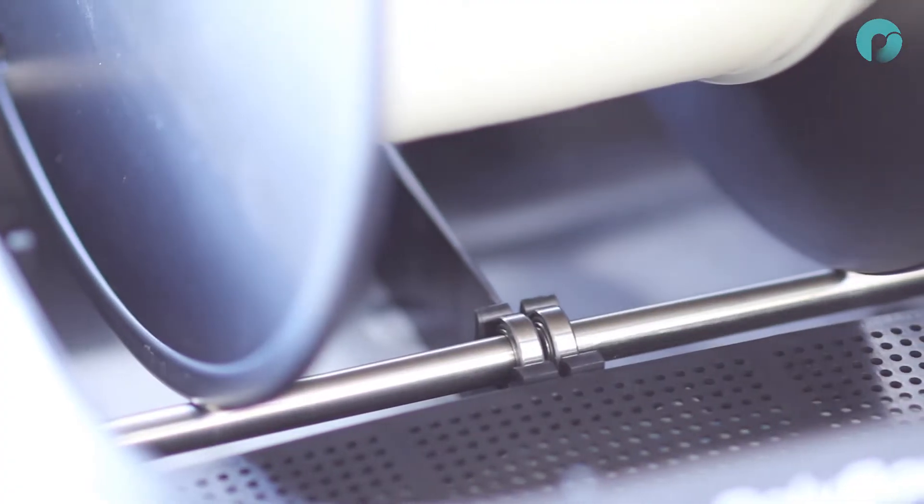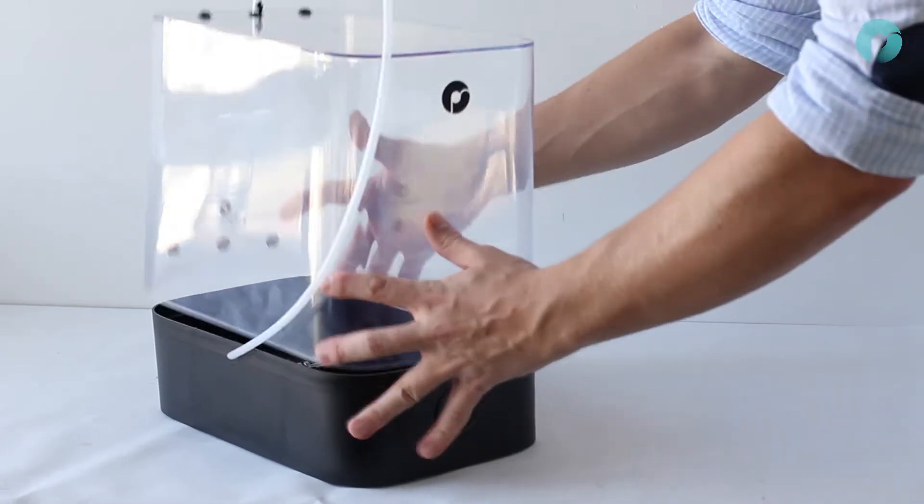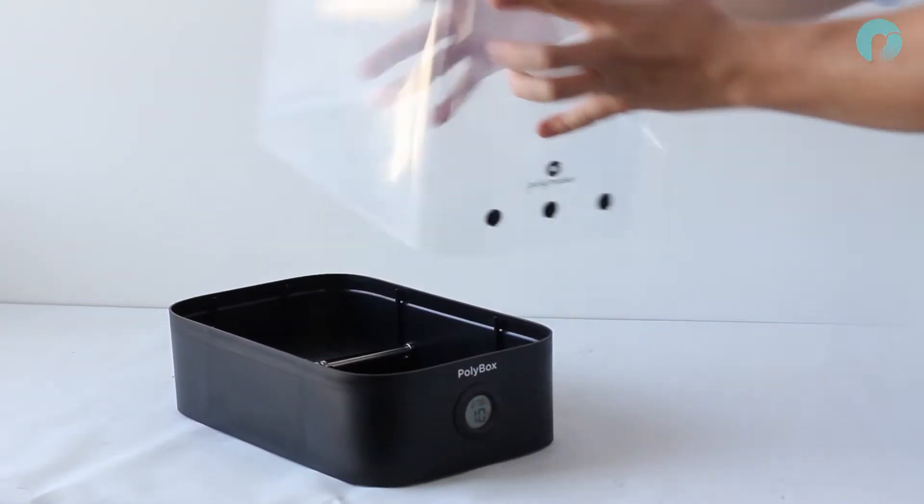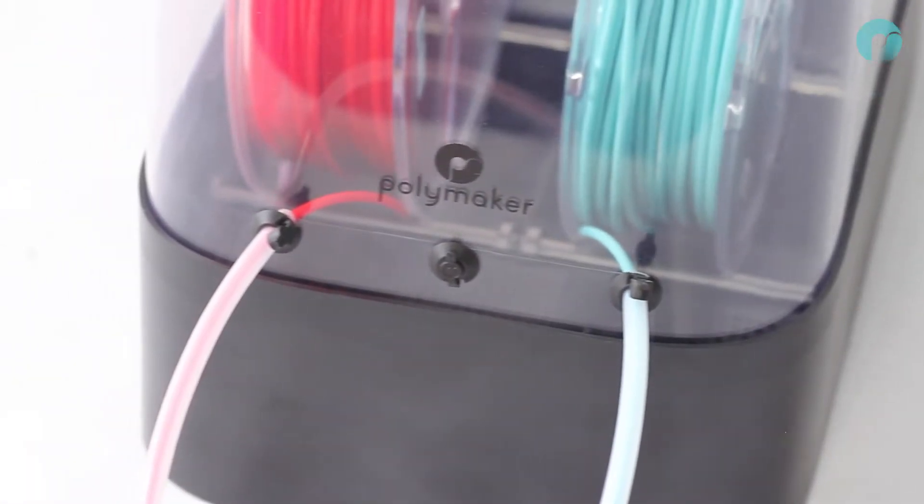Polybox features 8 ball bearings and 4 steel rods for smooth operation, and features a reversible casing and 6 filament guide holes, so no matter where your printer feeds from there is a setup that will work for you.